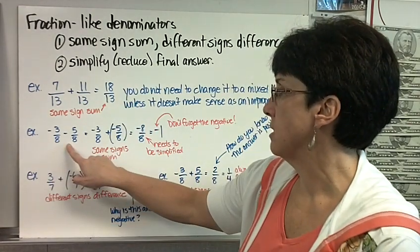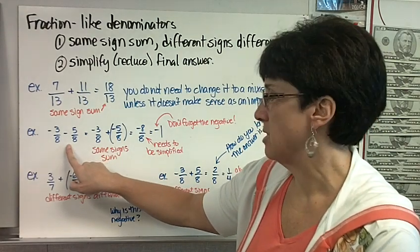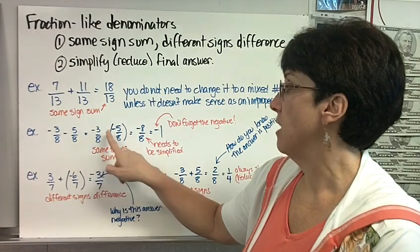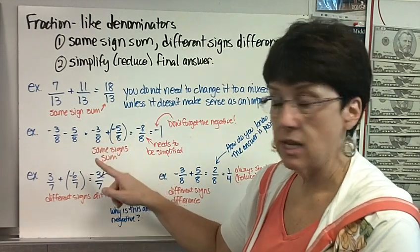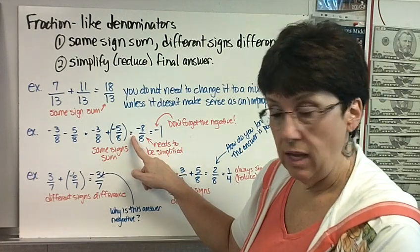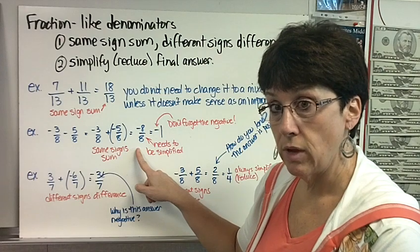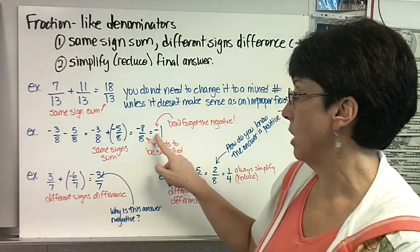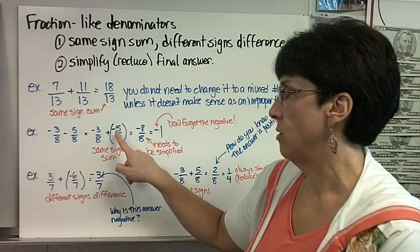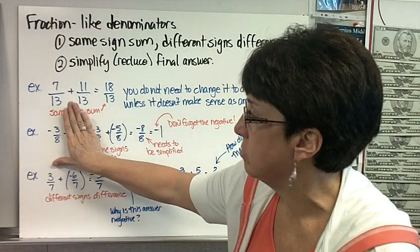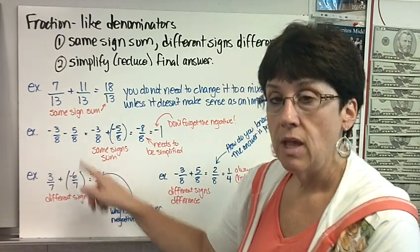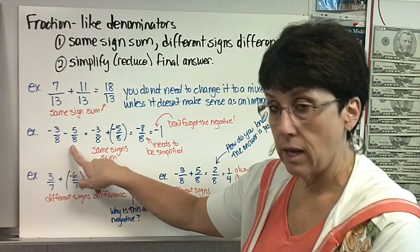Here's another example: negative 3 eighths minus 5 eighths. This is one of those problems that looks funny. It's not a traditional subtraction where the first number is bigger, so I'm going to rewrite it as adding the opposite. Negative 3 eighths stays the same, and then I put a plus, parentheses, negative 5 eighths. Now this stands out: negative 3, negative 5. They're the same sign, so I'm going to sum. Adding my numerators, I get negative 8 eighths. Well, this needs to be simplified because anything over itself is 1, but don't forget your negative sign. When you talk about the individual terms, you talk about the sign in front of it. So that's a negative 3 eighths and that's a negative 5 eighths. If I'm reading the whole problem, then I read the sign as the operation: negative 3 eighths minus 5 eighths.